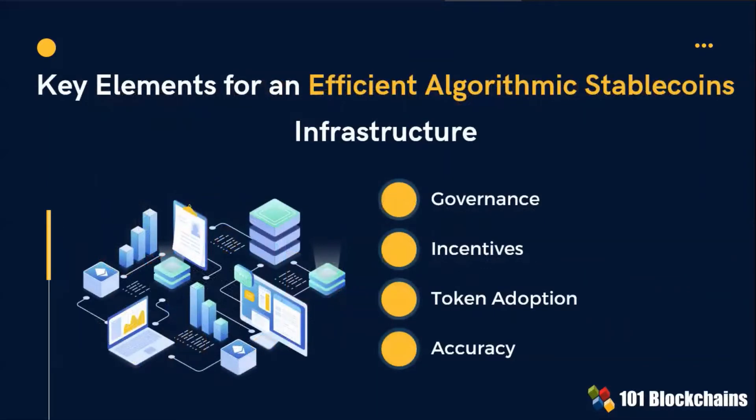There are four key elements for an efficient algorithmic stablecoins infrastructure, and these are governance, incentives, token adoption, and accuracy.